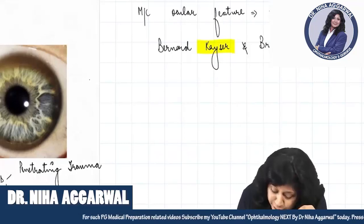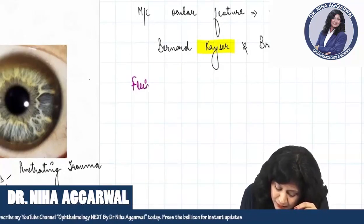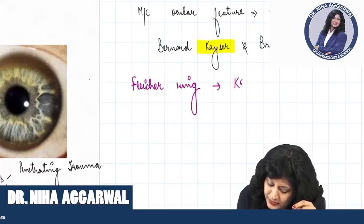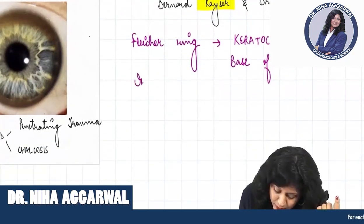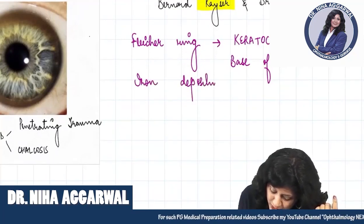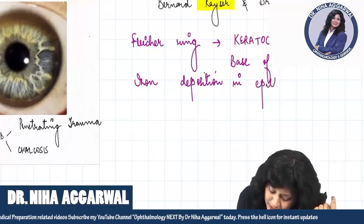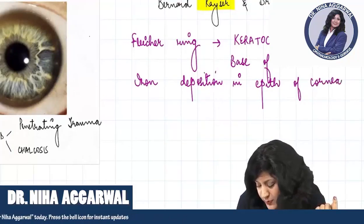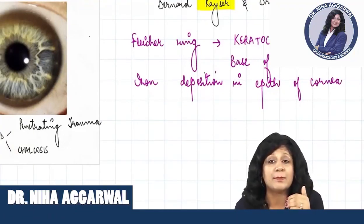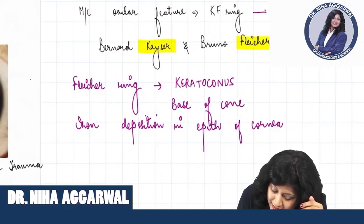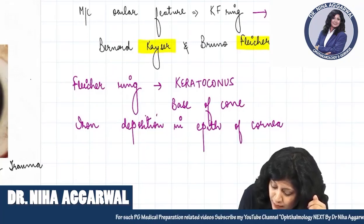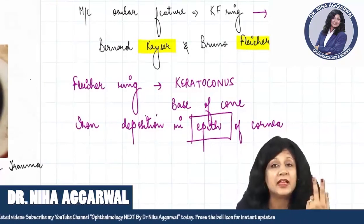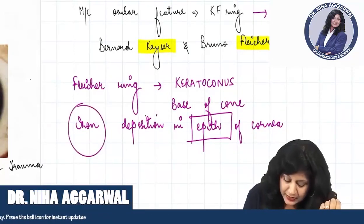The KF ring is named after two scientists: Bernard Kayser and Bruno Fleischer, two friends who discovered it. Now don't get confused with another thing called the Fleischer ring. The Fleischer ring is found in keratoconus, at the base of the cone, where we have iron deposition. These depositions are always very important with respect to the layers of the cornea. The KF ring is found in Descemet's membrane, while the Fleischer ring is found in the epithelium — KF ring has copper deposition, while Fleischer ring has iron deposition.